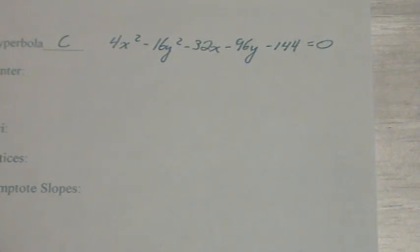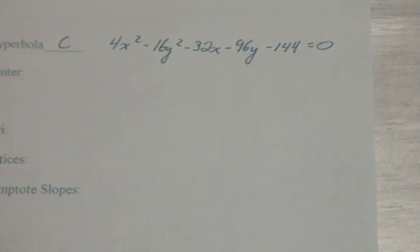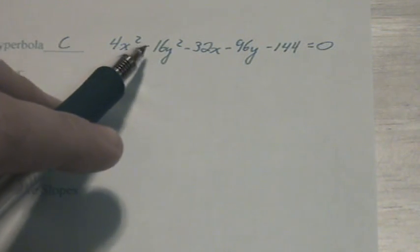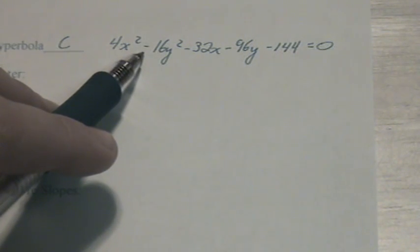Here we have a hyperbola in general form, which we're going to convert into standard form. We can tell it's a hyperbola because the x squared and the y squared are being subtracted.